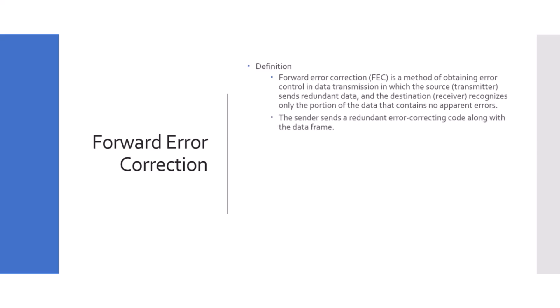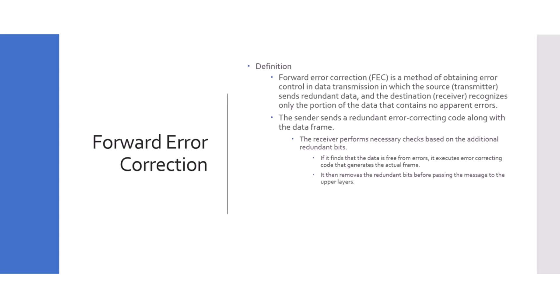The sender sends a redundant error-correcting code along with the data frame. The receiver performs necessary checks based on the additional redundant bits — this is built into the Teams client. If it finds the data is free from errors, it executes the error-correcting code that generates the actual frame, then discards the redundant data before passing it to the upper layers. FEC is part of UDP and part of the whole Teams process to have redundant data in packets sent from sender to receiver.